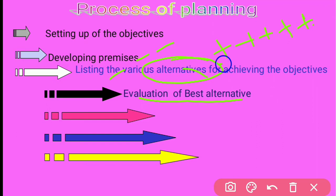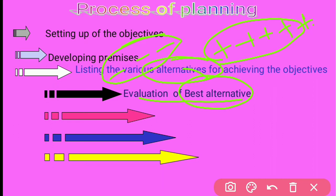The manager prepares a list and in this evaluation process, the alternative with the maximum positive aspects is selected as the best alternative. It must also be the most feasible alternative, because if it is not feasible it will not help in achieving the target and objective. The best alternative is selected keeping in mind the resources and feasibility of the organization.